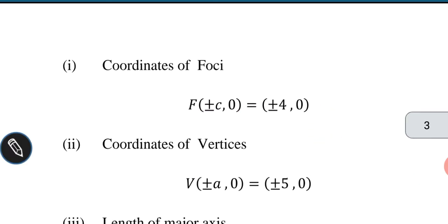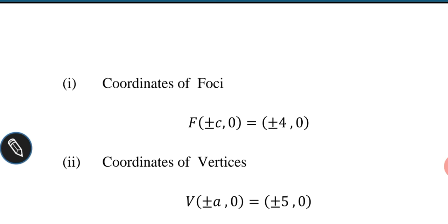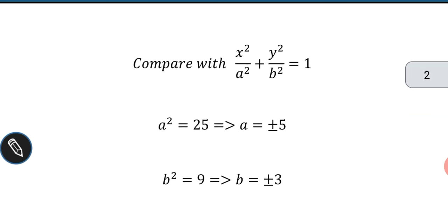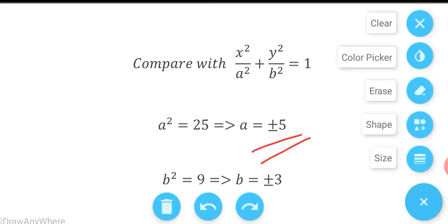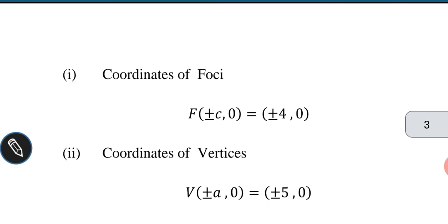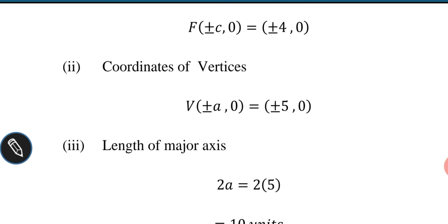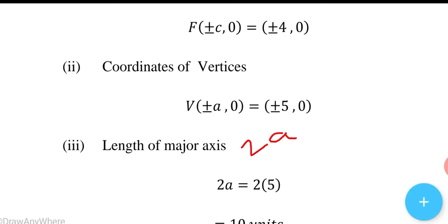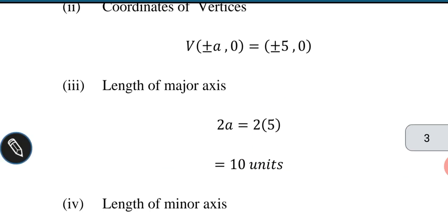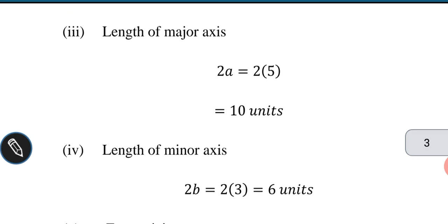The coordinates of vertices are V of plus or minus a comma 0. Since a equals 5, the vertices are at V(±5, 0). The length of the major axis is 2a; with a equal to 5, that is 2 into 5, which equals 10 units. The length of the minor axis is 2b; with b equal to 3, that is 2 into 3, which equals 6 units.